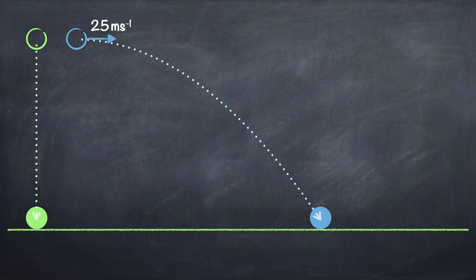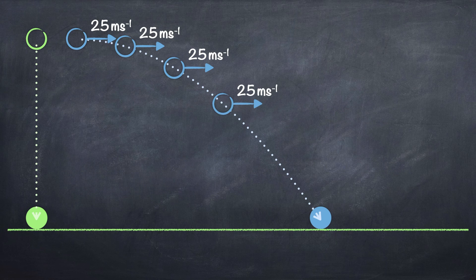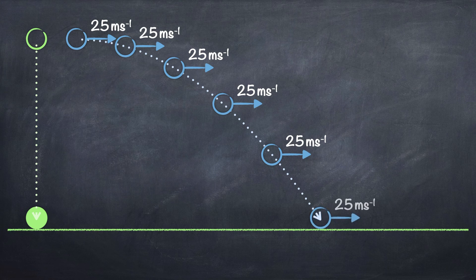If we ignore air resistance — which is something we usually do with these questions in National 5 Physics — then after 1 second the horizontal speed will still be 25 m/s. After 2 seconds it will be 25 m/s, then 25 m/s again at 3 seconds and 4 seconds after being projected. Its horizontal speed after 5 seconds, just before it hits the ground, will also be 25 m/s. So remember that horizontally, a projectile has a constant speed.